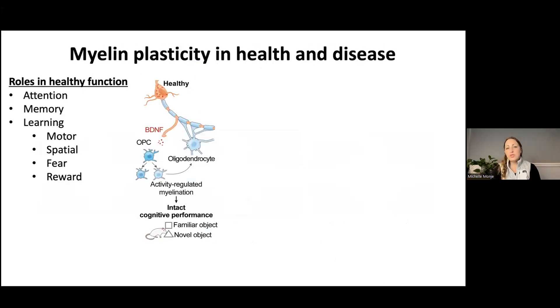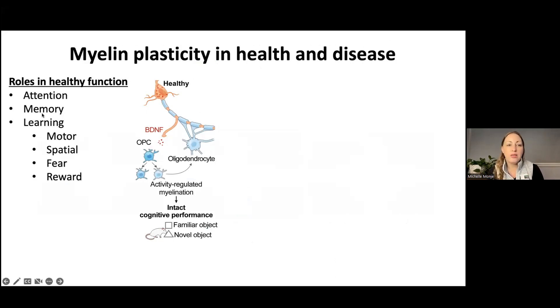The way that healthy activity-dependent myelination changes circuit dynamics has been determined both computationally and experimentally to generally promote coordinated circuit functions — such as synchronizing the inputs from two different regions of the nervous system to its target. This kind of synchronicity can promote synchronous oscillations between nodes within a neural network and generally promote better function in the healthy brain. Plasticity of myelin, which tunes neural circuit function, contributes to healthy attention, memory, and various forms of learning.